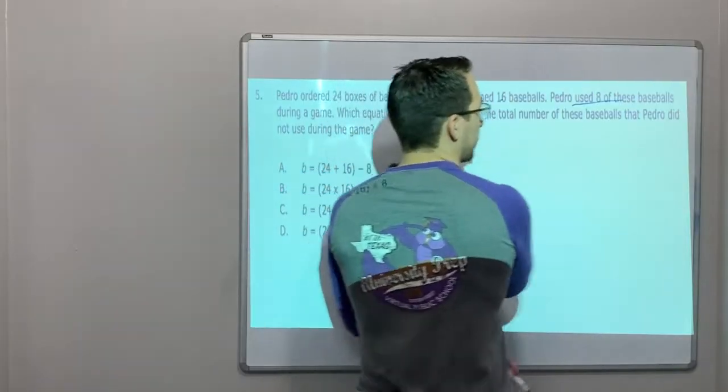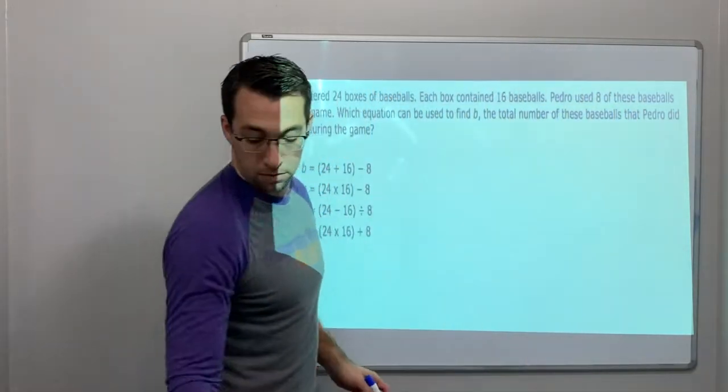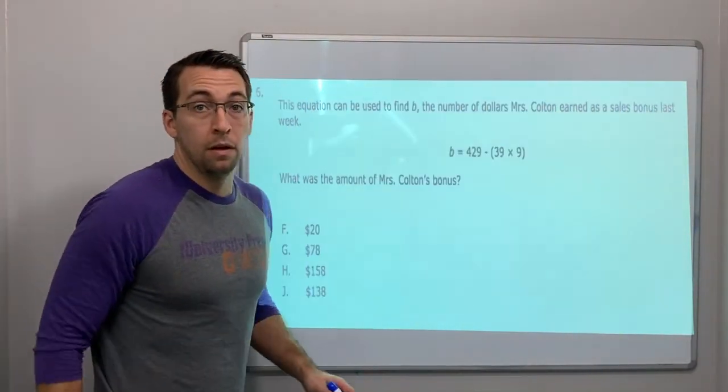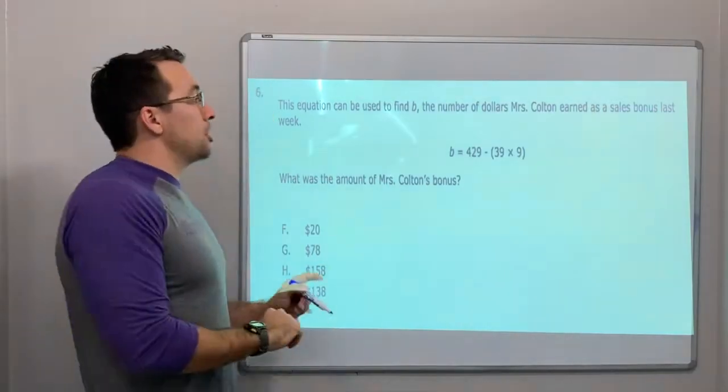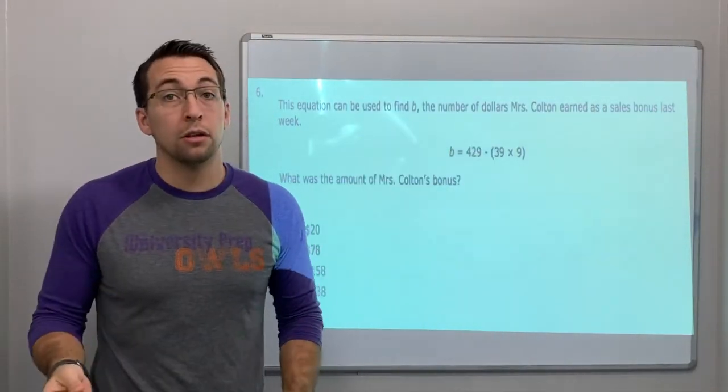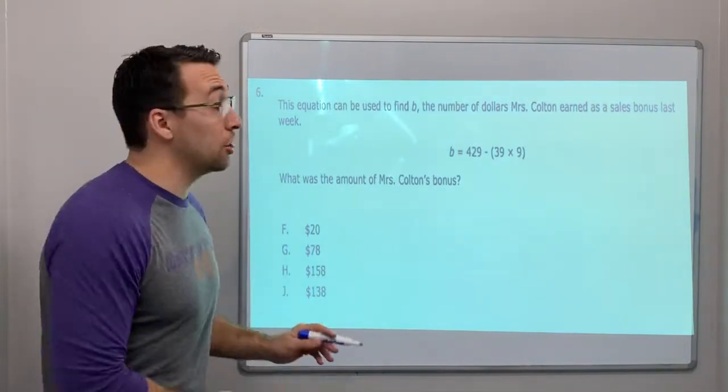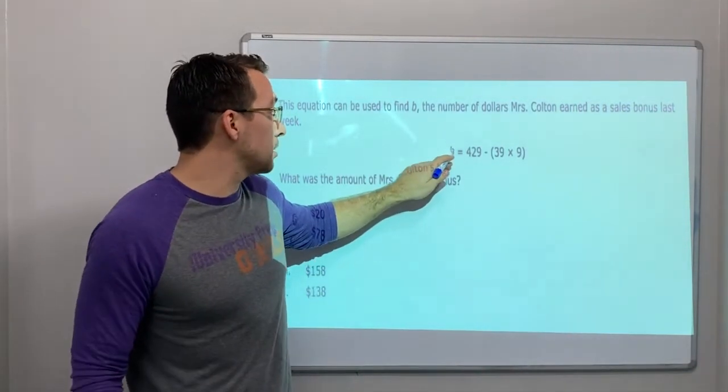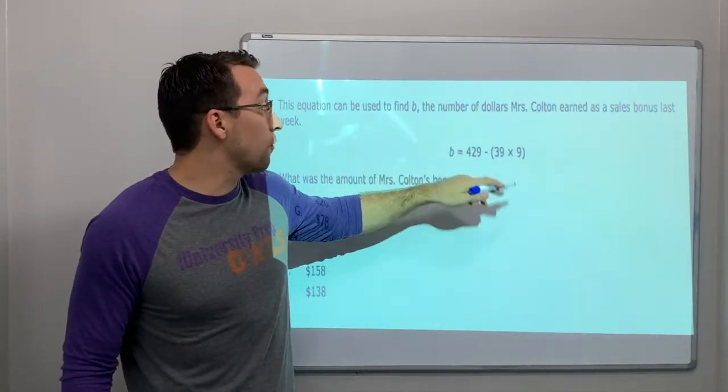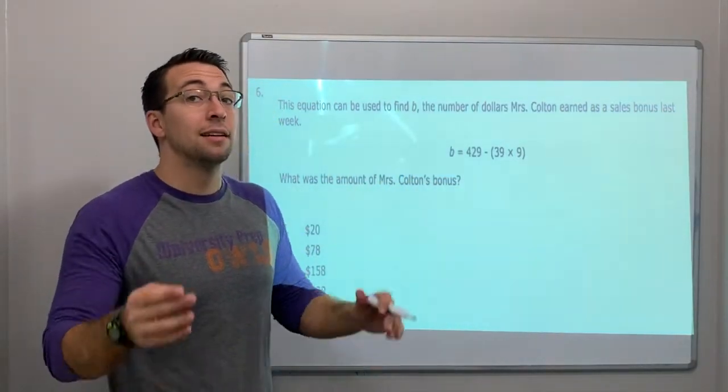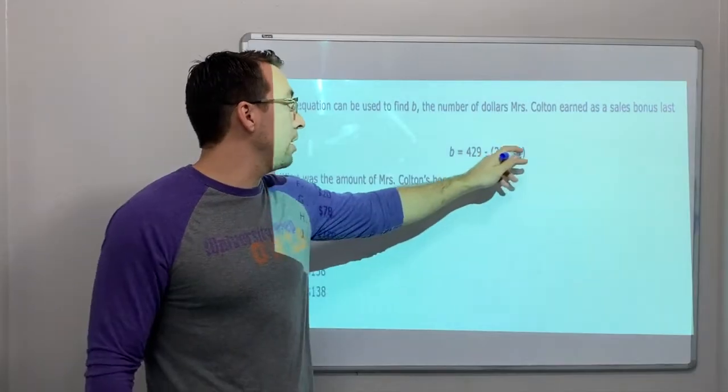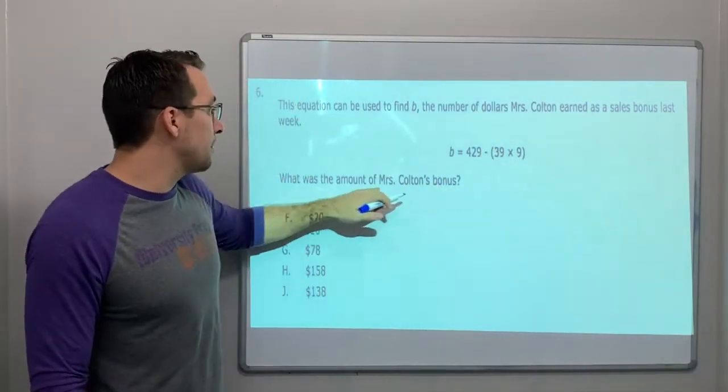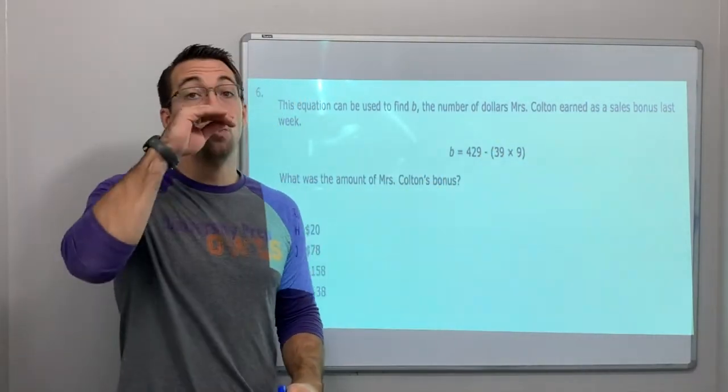Last question. This equation can be used to find B, the number of dollars that Mrs. Colton earned as a sales bonus last week. B for bonus equals 429 minus 39 times 9. What was the amount of Mrs. Colton's bonus?